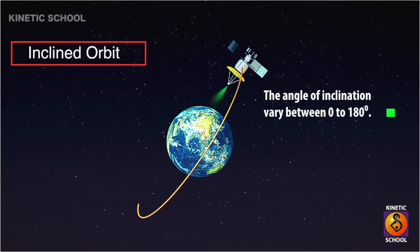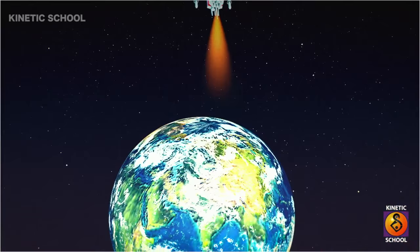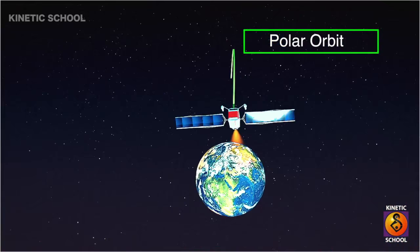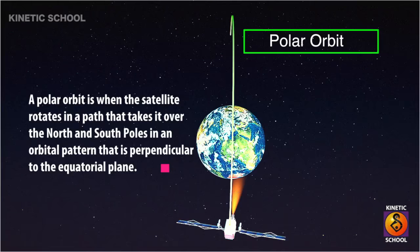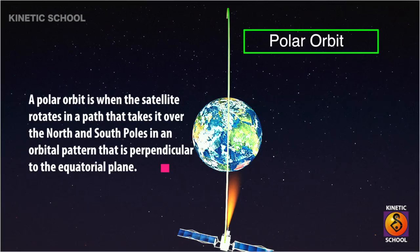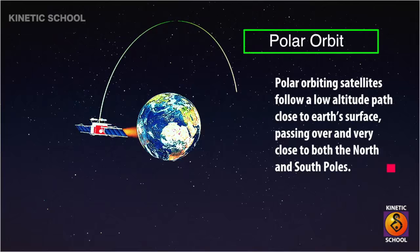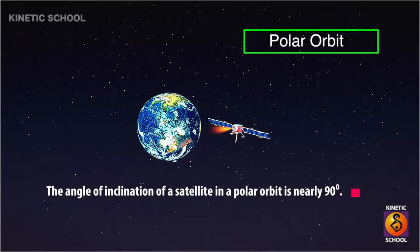The angle of inclination varies between zero to 180 degrees. A polar orbit is when the satellite rotates in a path that takes it over the north and south poles in an orbital pattern that is perpendicular to the equatorial plane. Polar orbiting satellites follow a low altitude path close to Earth's surface, passing over and very close to both the north and south poles. The angle of inclination of a satellite in a polar orbit is nearly 90 degrees.